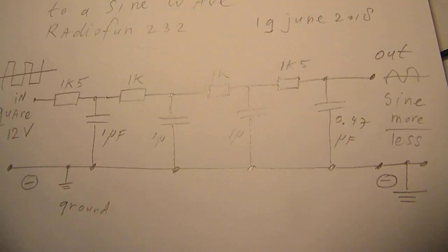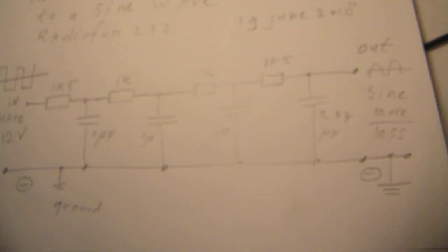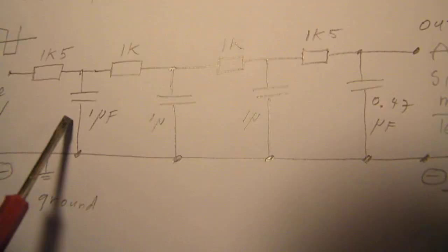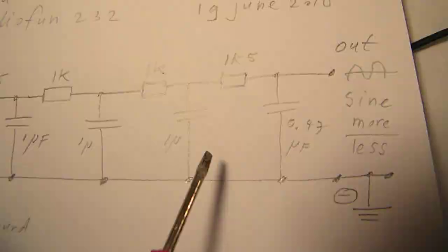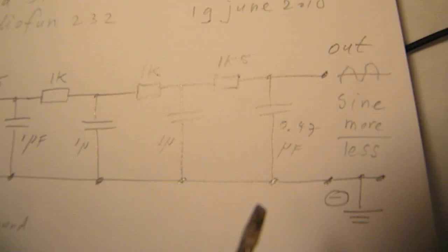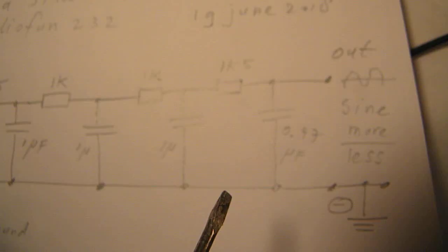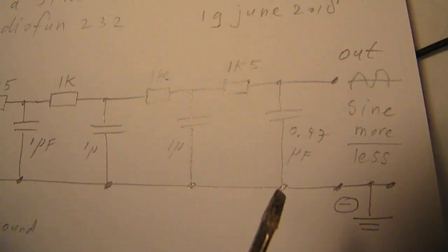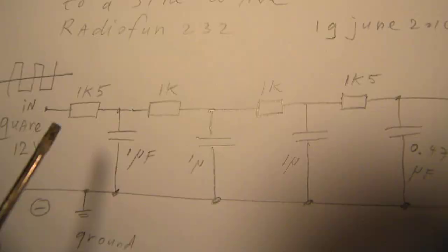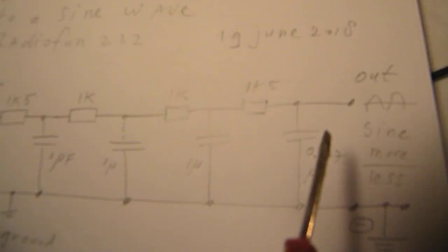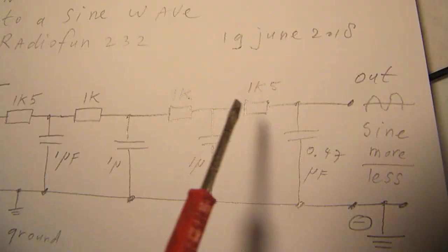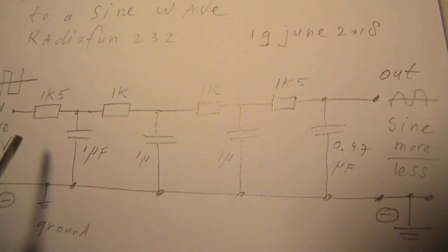Anyway, you can design such a filter completely experimental by changing the values from the caps. So for higher frequencies, lower values, say 470 nanofarad or 0.47 microfarad. Also the resistor values, always take them the same.